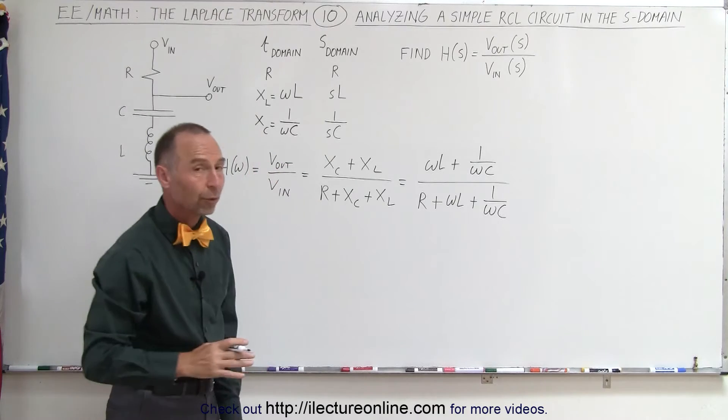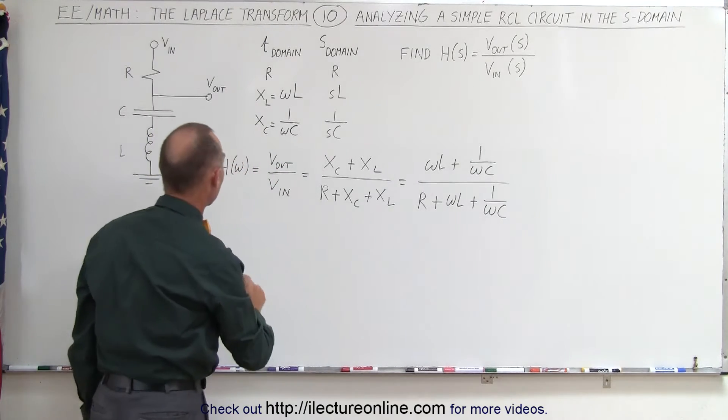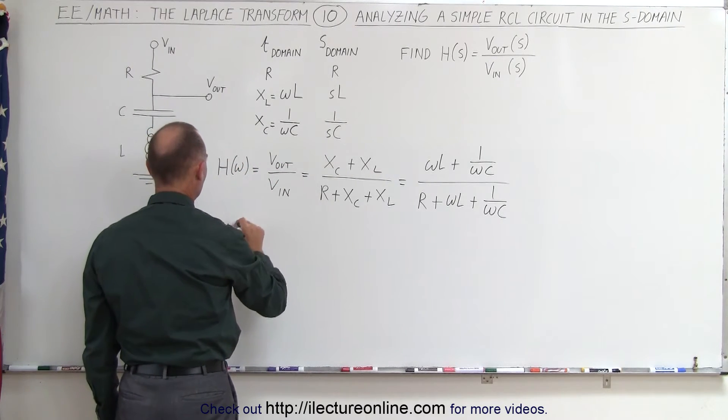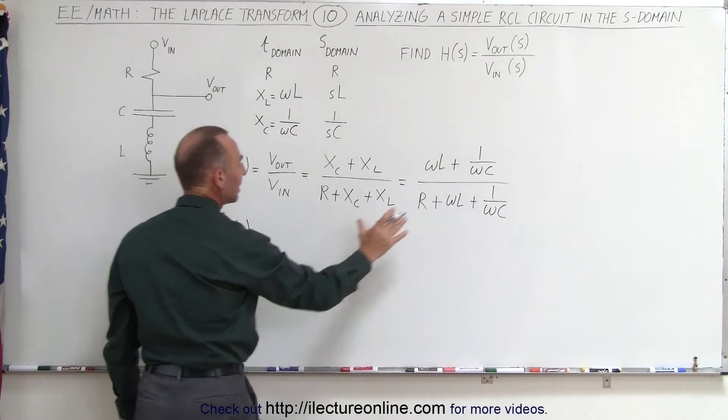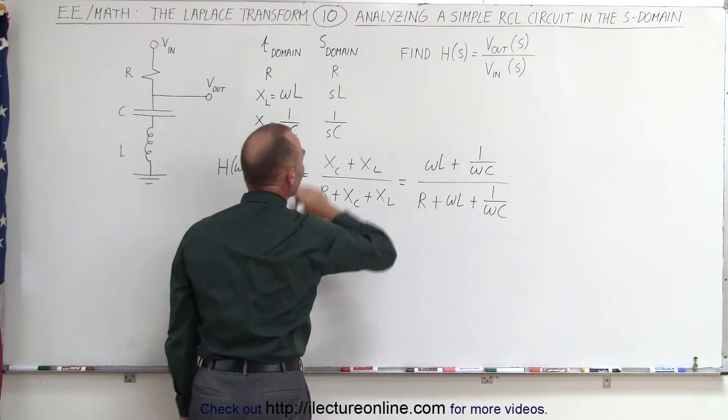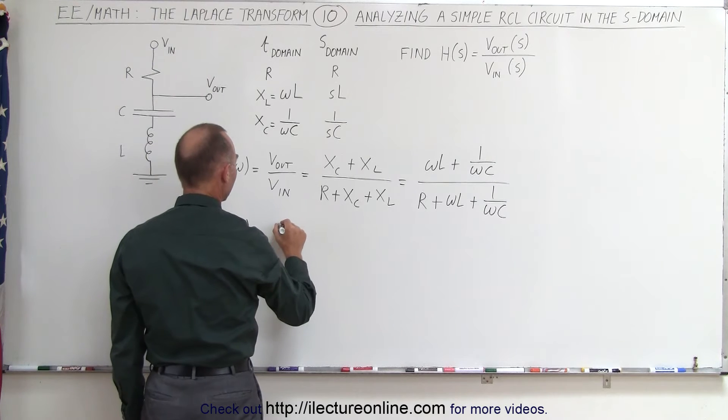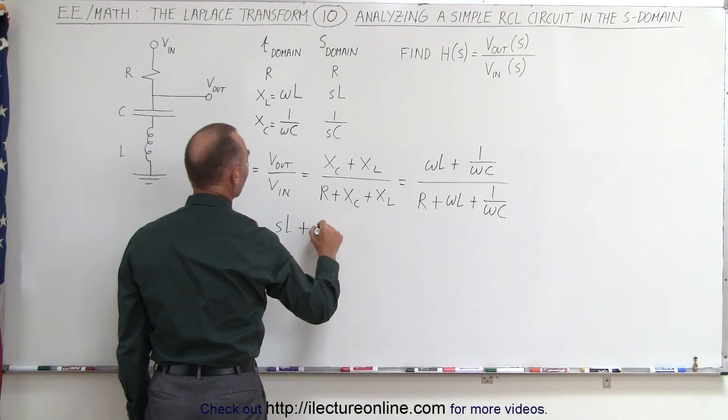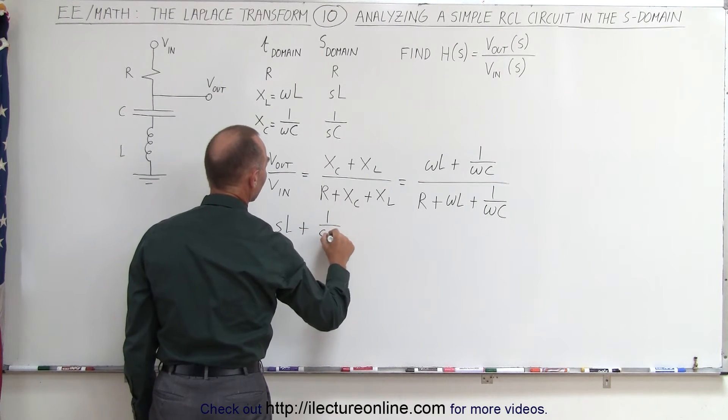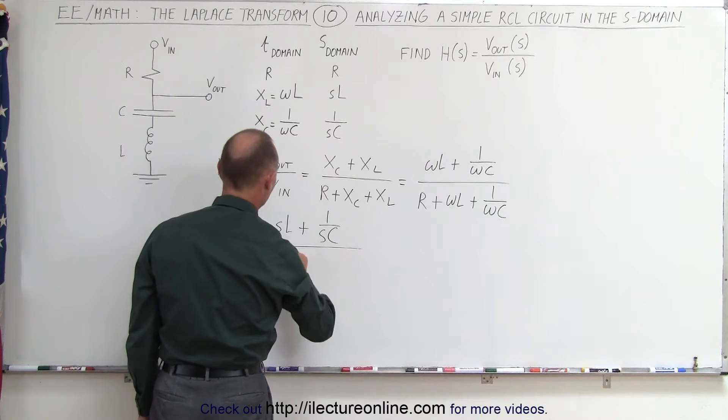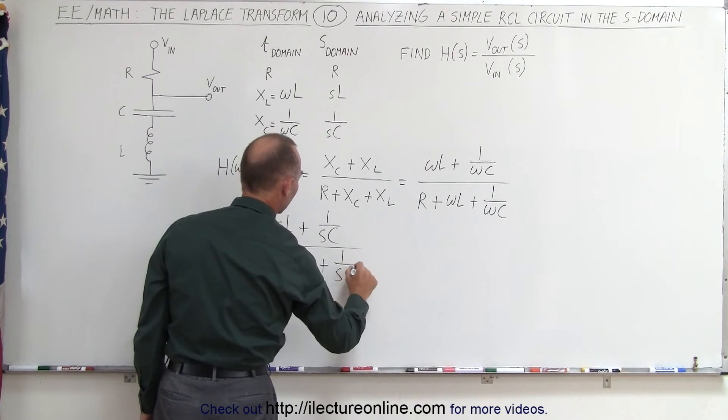So what we're going to do now is we're going to transfer that into the S domain, so H in the S domain is simply going to be this, but replaced with the equivalent in the S domain, so that would be SL plus 1 over SC divided by the resistance plus SL plus 1 over SC.